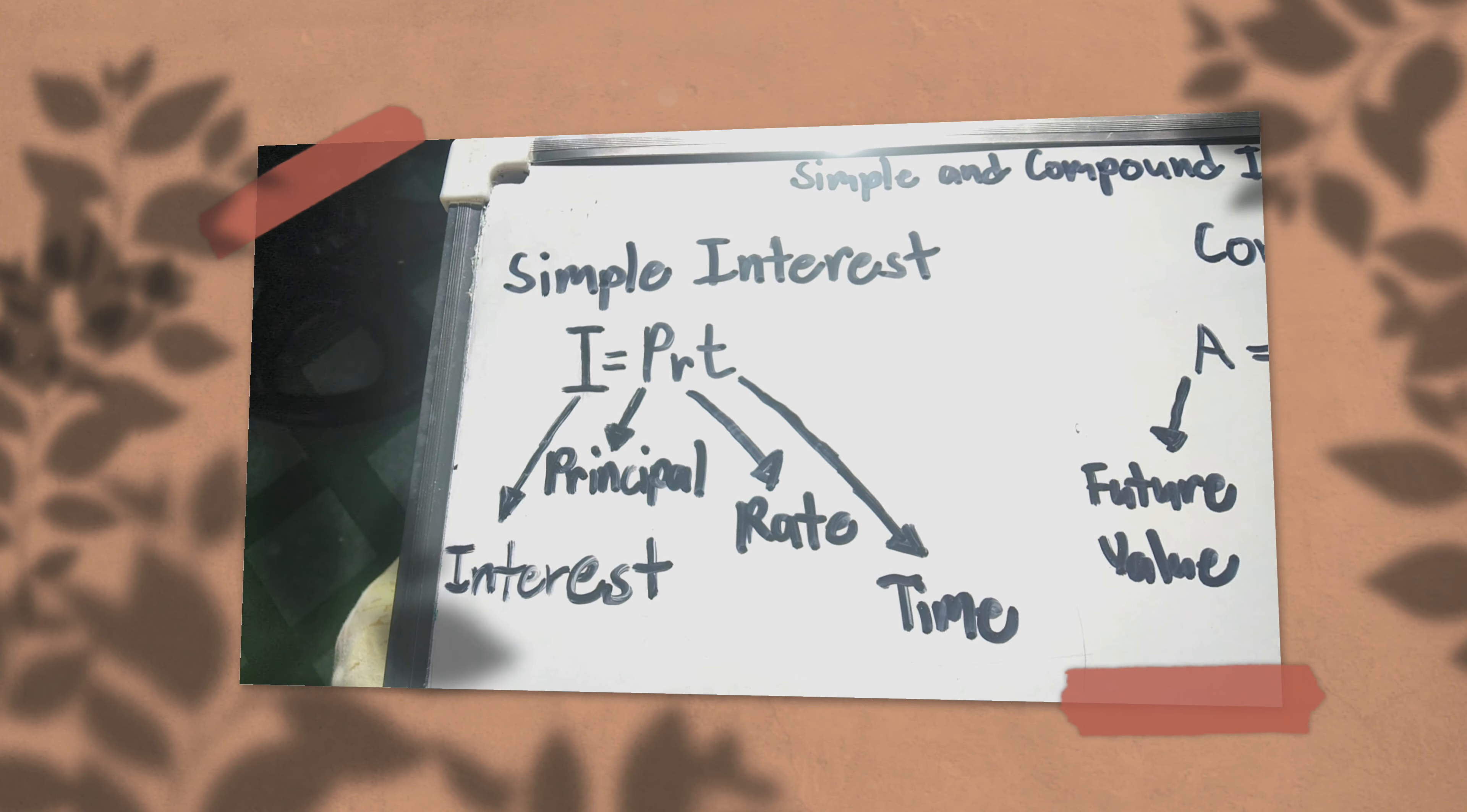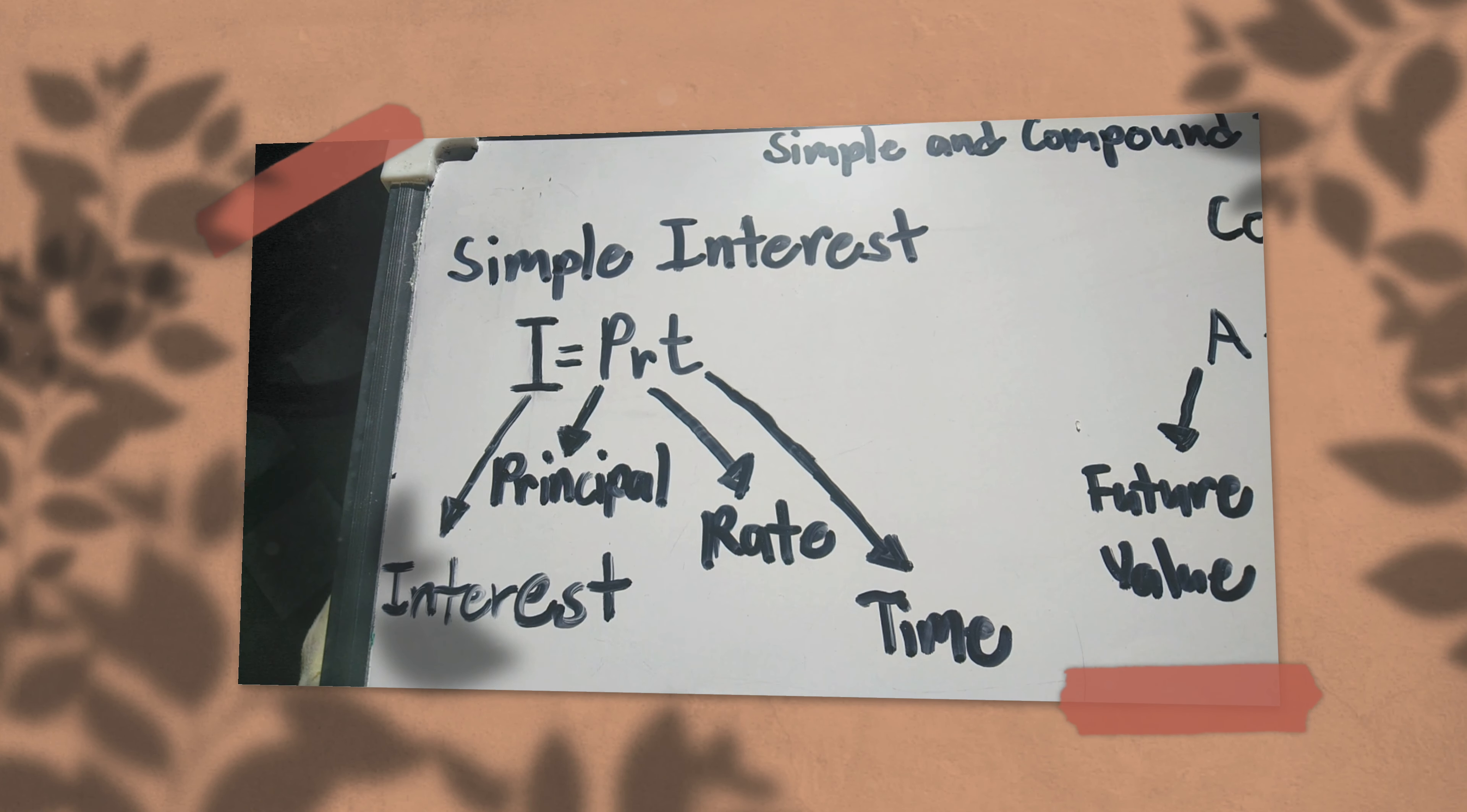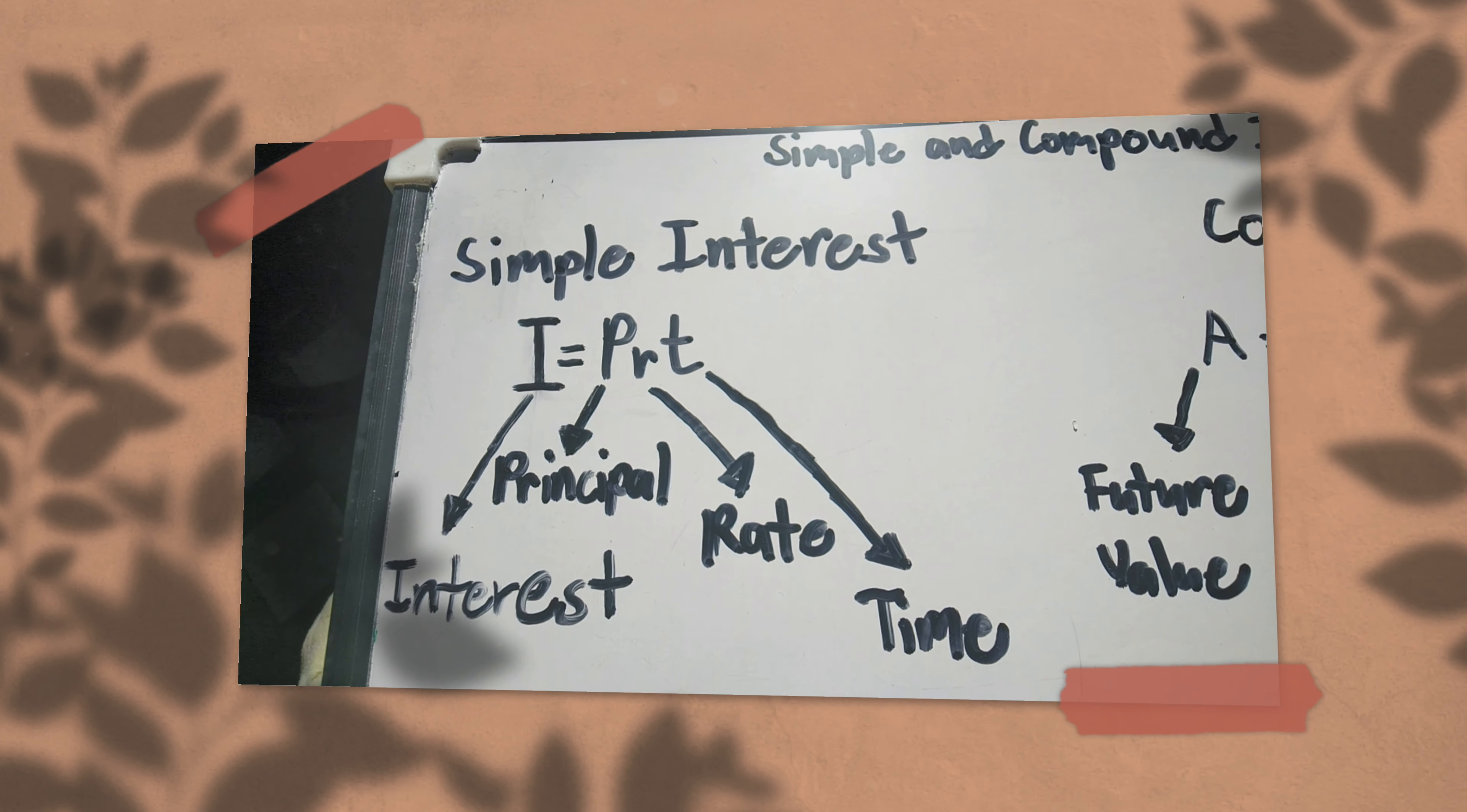I, which means interest, equals P, which means principal or the value of the money. R means the rate of interest.